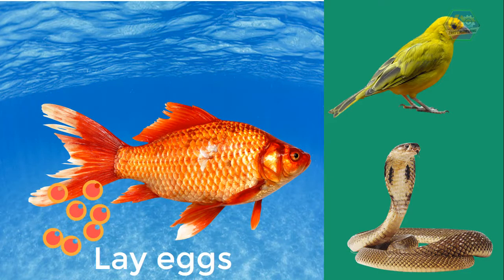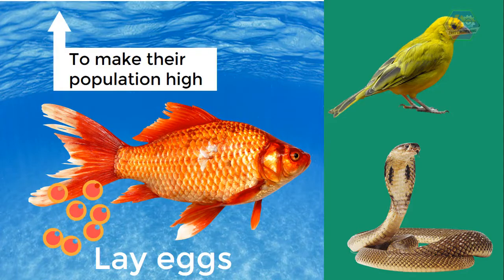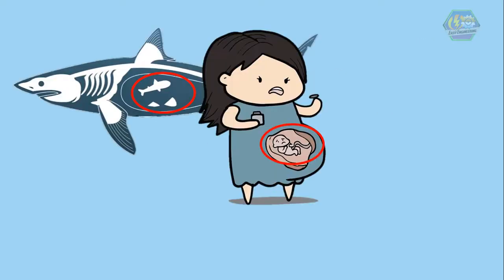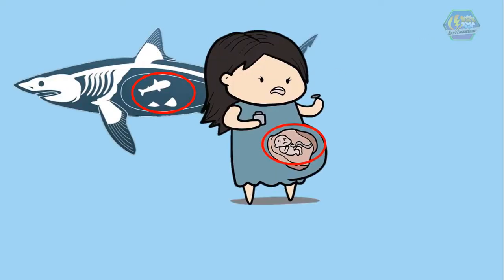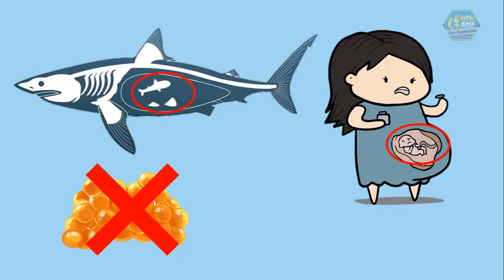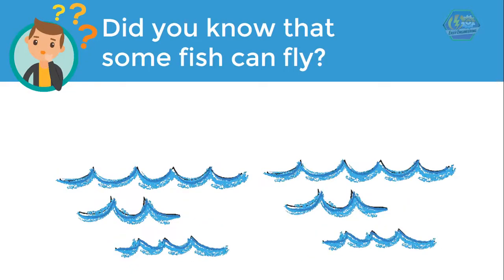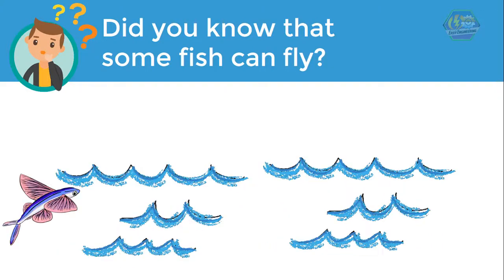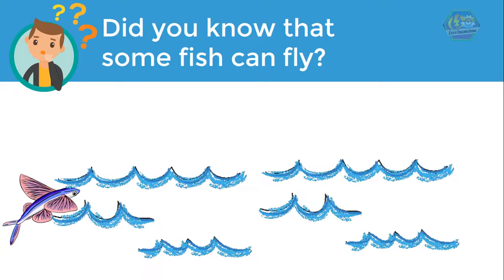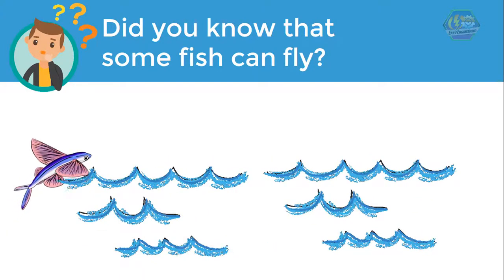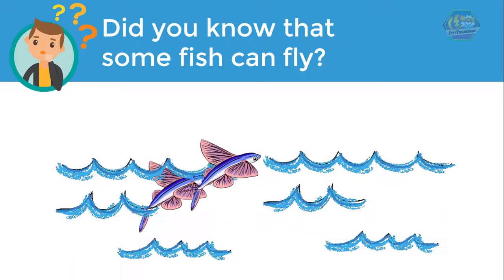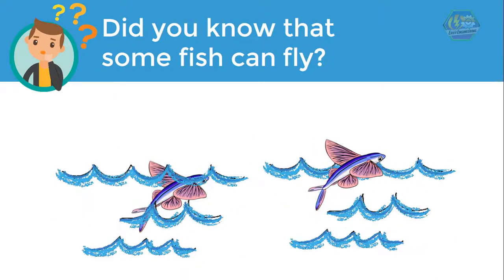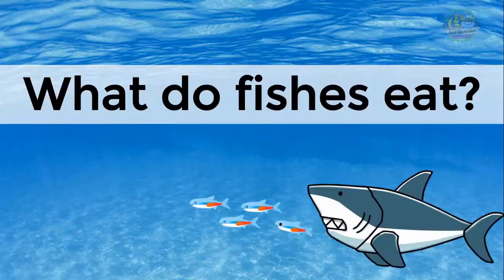Fish also lay eggs, like birds and reptiles. In fact, they lay so many eggs to keep their population high. But sharks produce their babies like humans — they don't need eggs. Did you know that some fish can fly? They are called flying fish. They jump into the air from water and glide using their long fins — and they're yummy too!